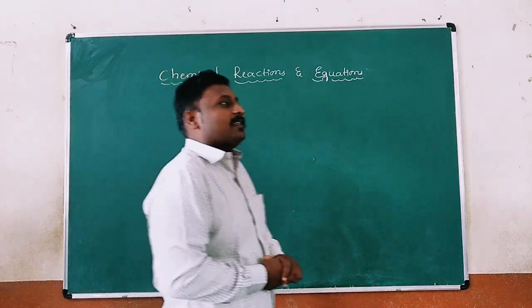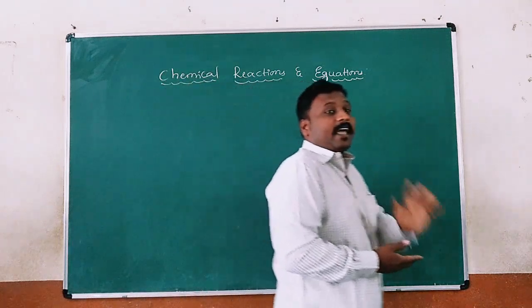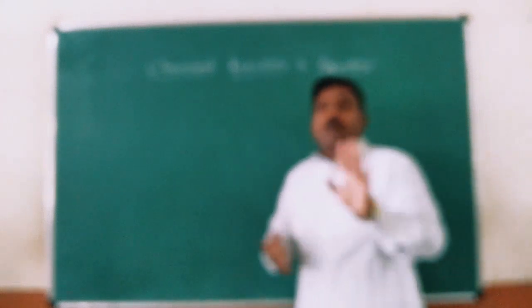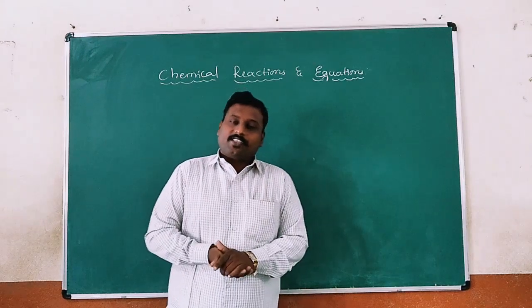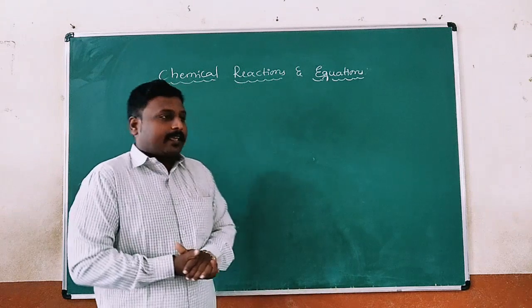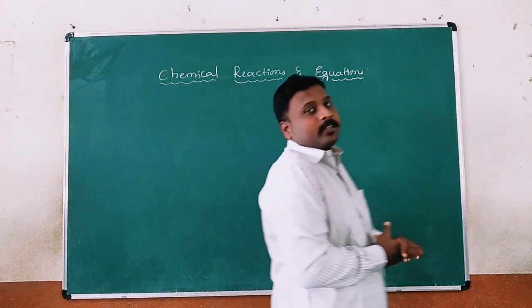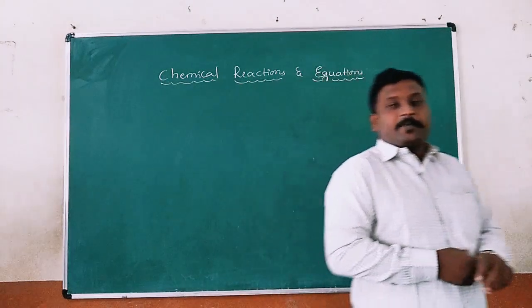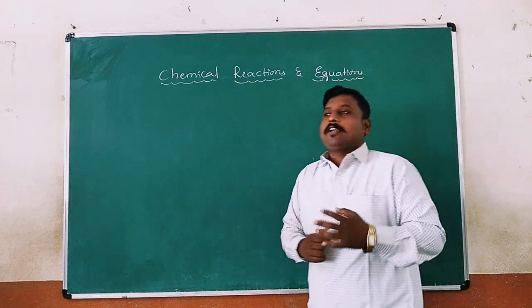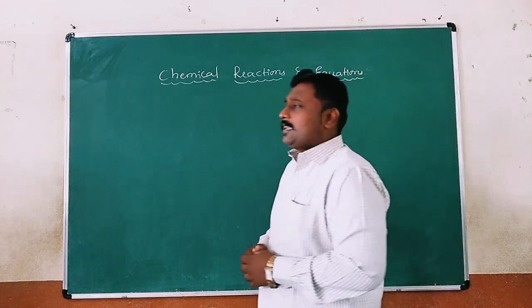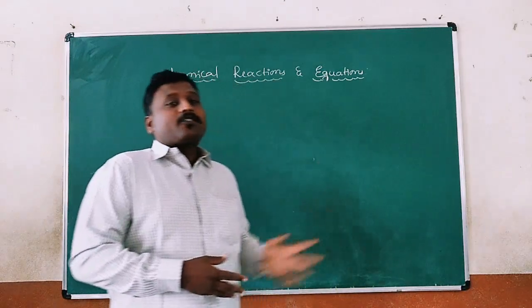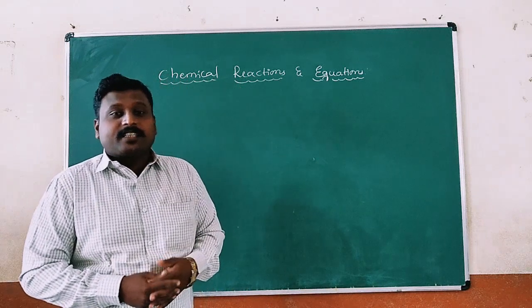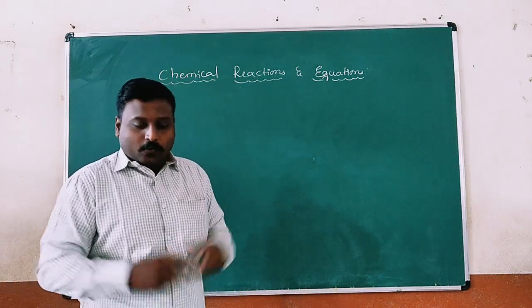Afterwards, we will look at types of chemical reactions. There are totally four types of chemical reactions you already know: first is combination reaction, second is decomposition reaction, third is displacement reaction, and fourth is double displacement reaction. After that, we will learn about oxidation reaction and reduction reaction in this chapter.